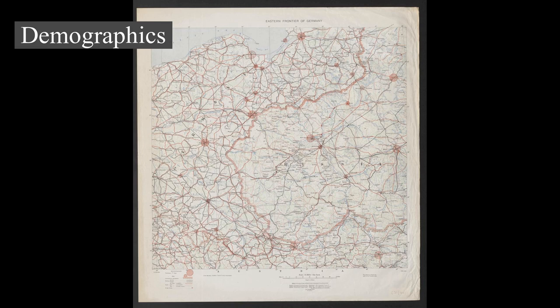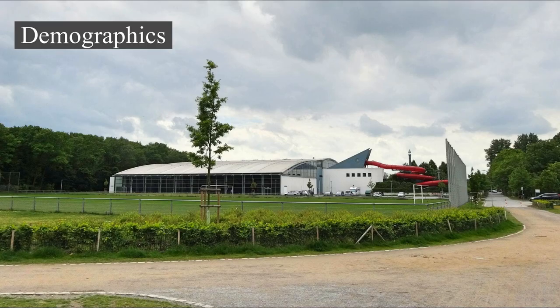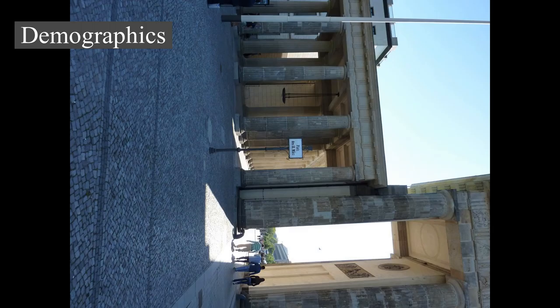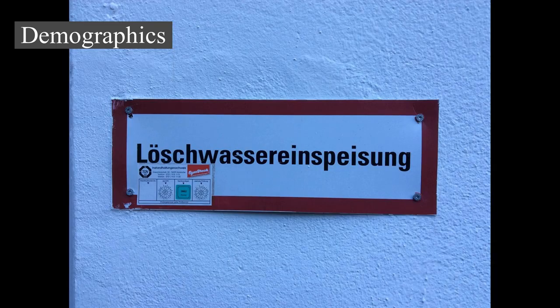Islam is the second largest religion in the country. In the 2011 census, 1.9% of respondents (1.52 million people) gave their religion as Islam, though this figure is deemed unreliable as many adherents may have exercised their right not to answer. Most of the Muslims are Sunnis and Alevites from Turkey, but there are small numbers of Shiites, Ahmadis, and other denominations. Other religions comprise less than 1% of Germany's population. A study in 2018 estimated that 38% of the population are not members of any religious organization, though up to a third may still consider themselves religious. Irreligion is strongest in the former East Germany and in major metropolitan areas.